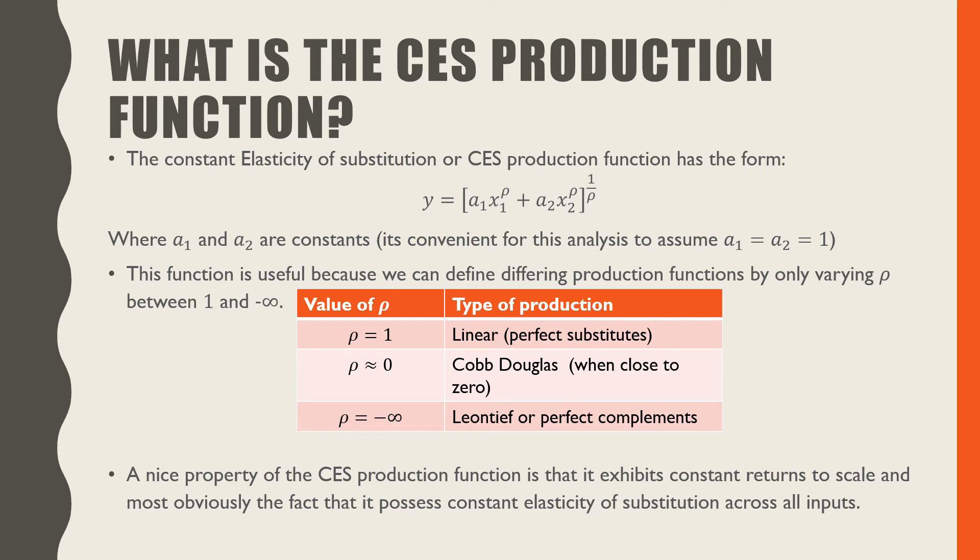If rho is equal to negative infinity, we end up with Leontief or perfect complements in our production.